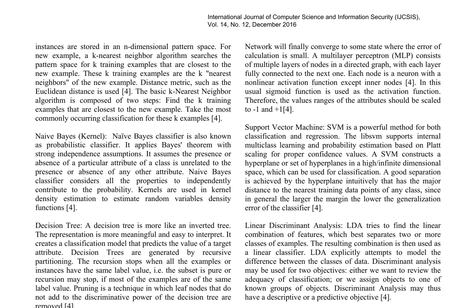This section discusses various machine learning algorithms used for classification, including k-nearest neighbors, naive Bayes, decision trees, neural networks, support vector machines, and linear discriminant analysis. The k-nearest neighbors algorithm searches for the k-training examples closest to a new instance in an n-dimensional pattern space, using a distance metric such as Euclidean distance. The classification is then determined by the most commonly occurring classification among these k-examples. Naive Bayes classifiers, also known as probabilistic classifiers, apply Bayes' theorem with strong independence assumptions, considering all properties to independently contribute to the probability.